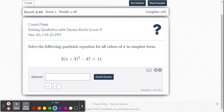So we want to isolate the x plus 3 squared on the left side. So we need to move that 47, the negative 47, by adding 47 to both sides of the equation. So when we do that, we have 2 times the binomial x plus 3 squared equals 58.